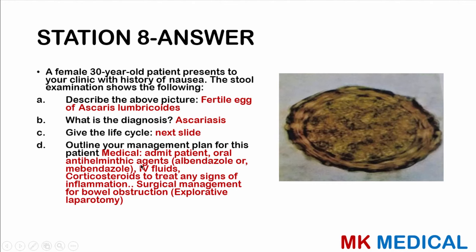How do we manage this patient? We admit the patient and give oral antihelminthic agents — albendazole or mebendazole. A single dose of albendazole has been seen to be sufficient and more effective. Give IV fluids to manage dehydration and corticosteroids to treat any signs of inflammation. If there are features of bowel obstruction, perform surgical management — an exploratory laparotomy. Order investigations including an abdominal X-ray (erect and supine) which may show features of intestinal obstruction.